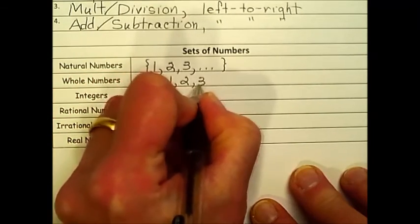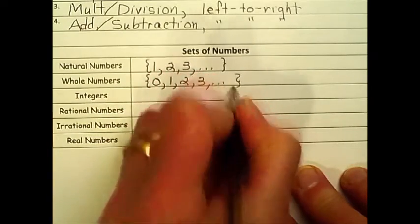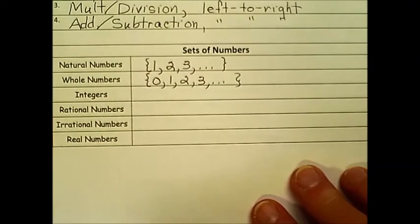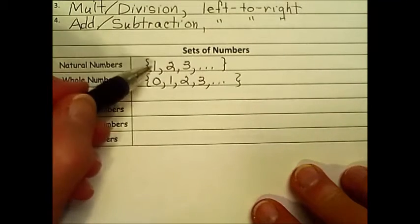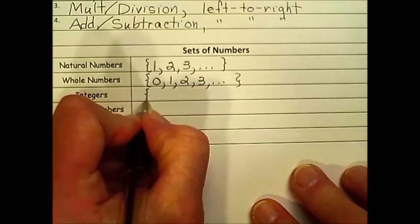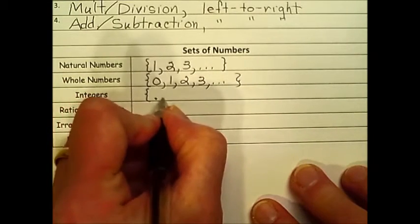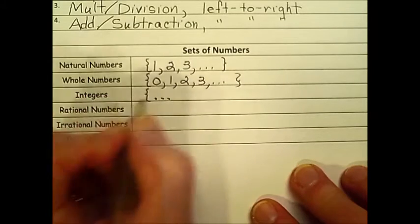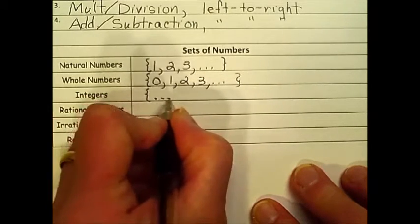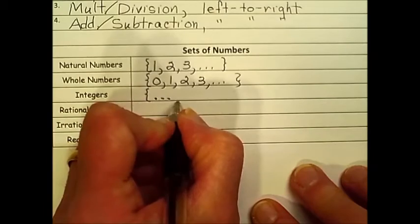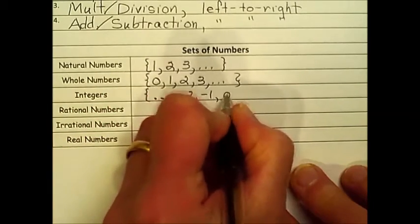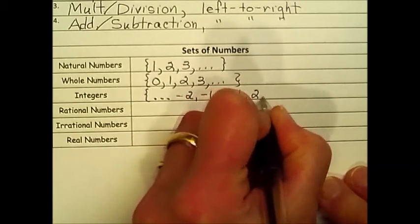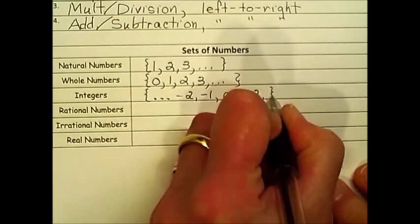The integers are the signed numbers. Think about as you progress through elementary school, how we were introduced to these numbers. We don't, at least as small children, understand the concept of negative numbers. So we're talking about infinitely smaller with nothing past the decimal. So we're talking numbers like negative 2, negative 1, on up into the whole and then natural numbers.